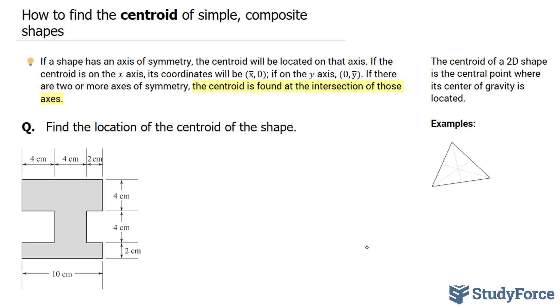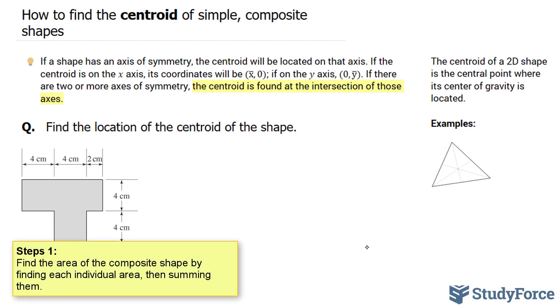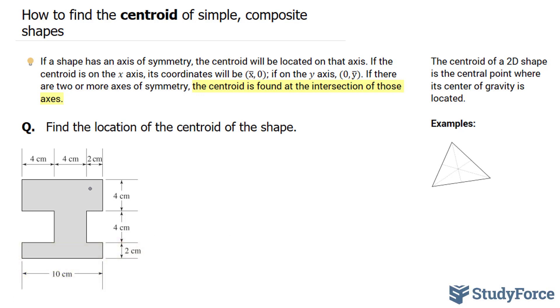What we have to do in this particular problem is split it into known shapes. So this is a composite shape meaning that it's made up of many different shapes. We have a rectangle here, we have a square here, another rectangle. So let's break it down and find the area of each. We'll call this one number 1, this 2, and this 3.